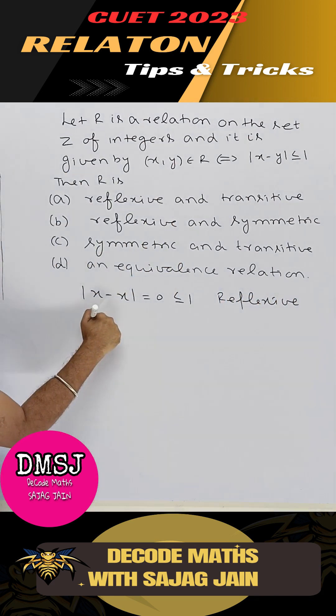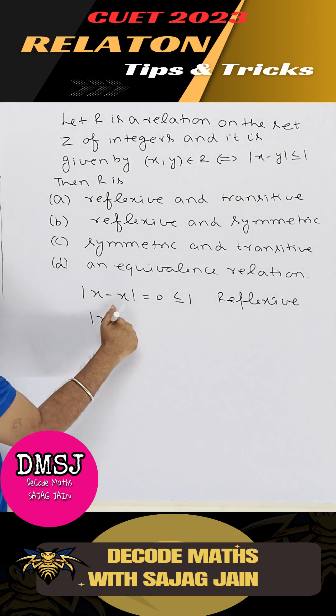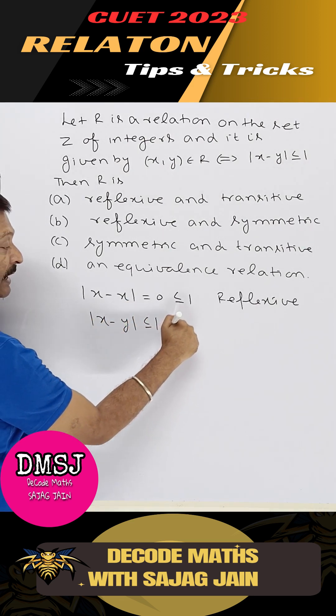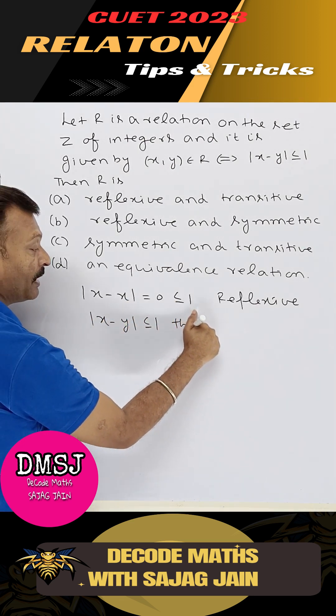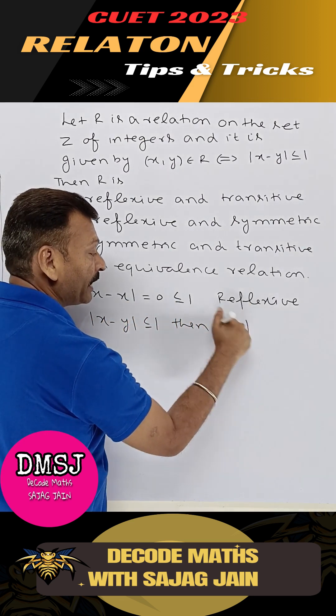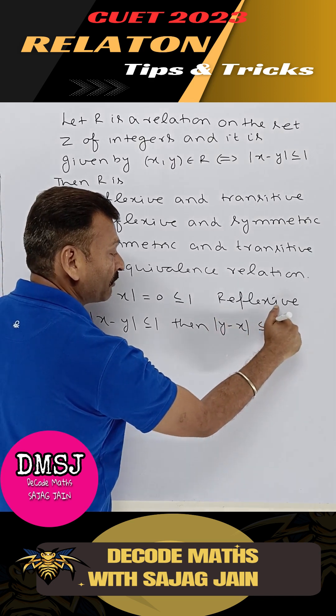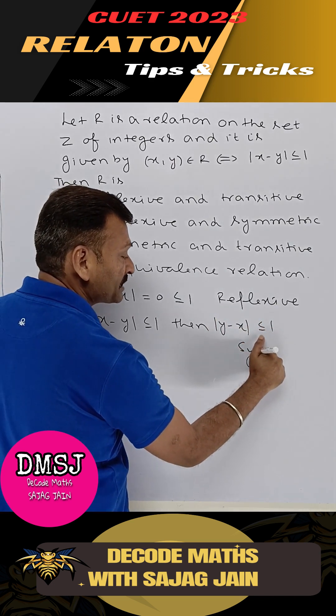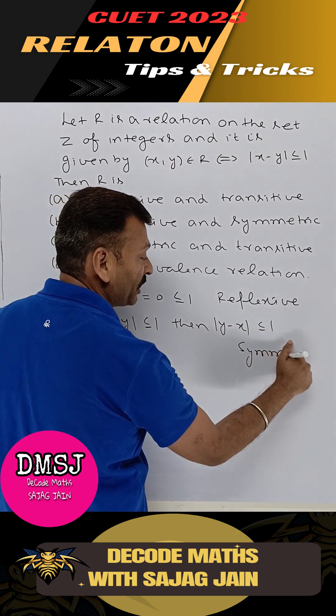Now, if |x - y| ≤ 1, then |y - x| is also ≤ 1. So this relation is also symmetric.